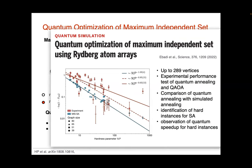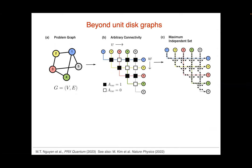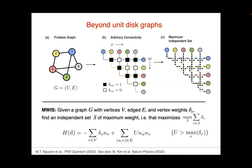What I'd like to focus on is how to really go beyond unit disk graphs. Many problems in the real world are not formulated naturally in terms of unit disk graphs — even though we heard about something like stops in Manhattan that might look like unit disk graphs. In many cases, problems are not in unit disk form. So you might wonder what you can do with Rydberg atom arrays in that case.